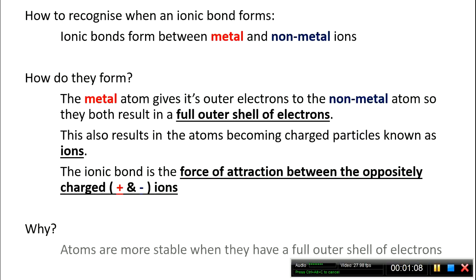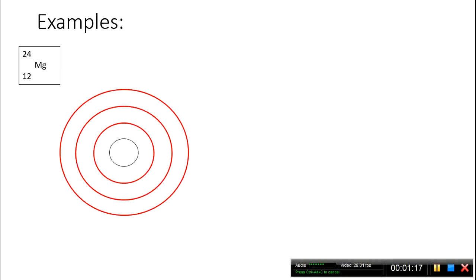So why does this happen? Well, atoms are more stable when they've got a full outer shell of electrons. Let's have a look at that in diagram form.